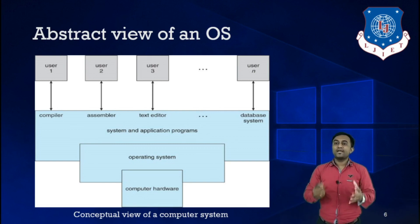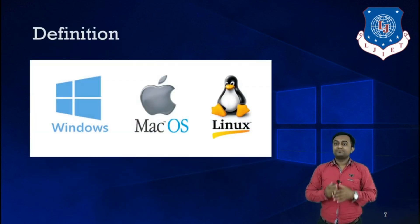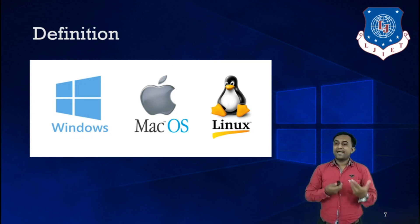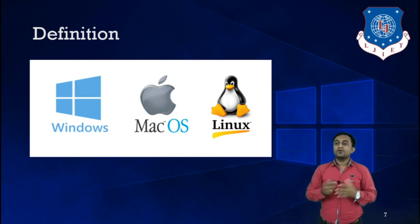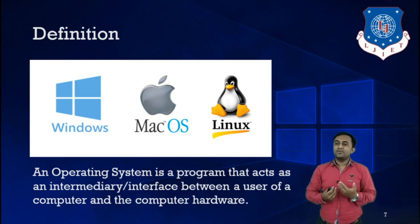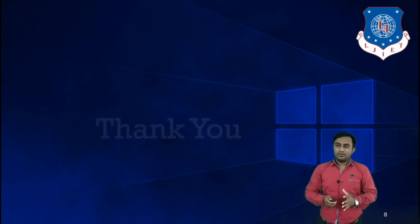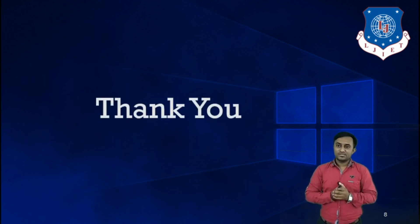This is the whole idea about the concept of operating system. Now you can understand the final definition: an operating system is a program — a system software — that acts as an intermediary between a user of a computer and the computer hardware. I hope it was clear to you. Thanks for watching this video — see you in the next one.